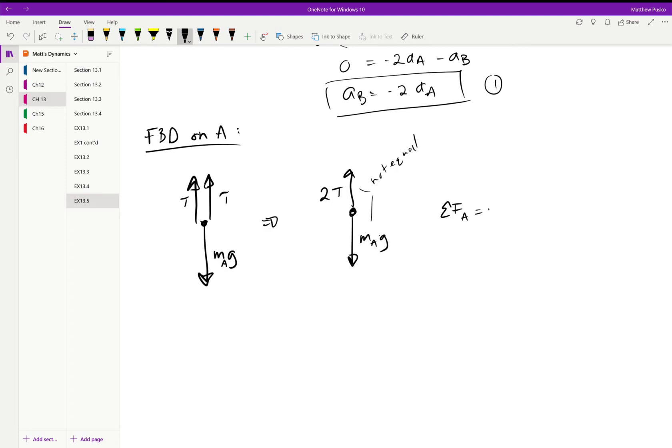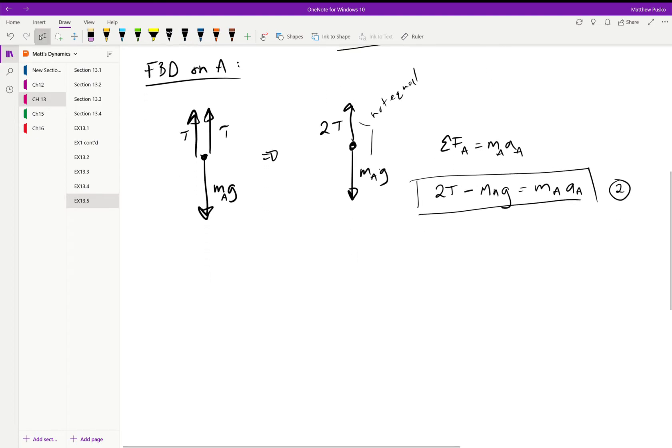We have to say the summation of the forces on A is equal to mass times the acceleration, and keep all the subscripts. When I sum forces I have 2T going up, a negative m_A g going down, and that's equal to the mass times the acceleration of A. We need to hold on to that equation of motion, call that equation number two.